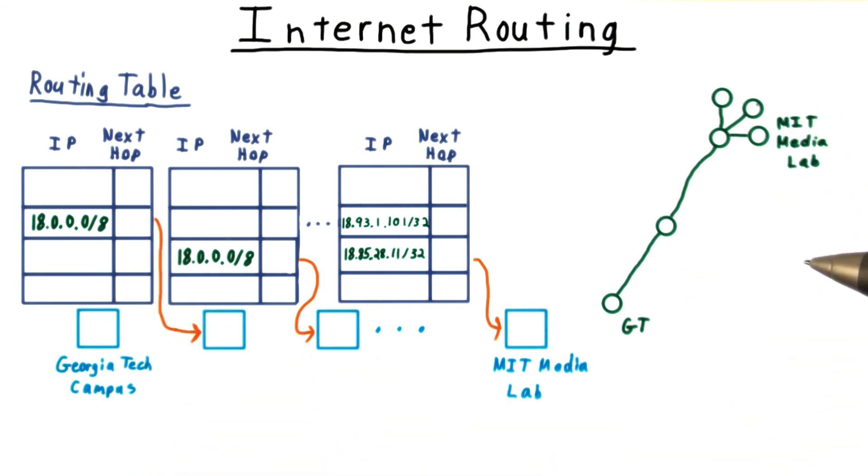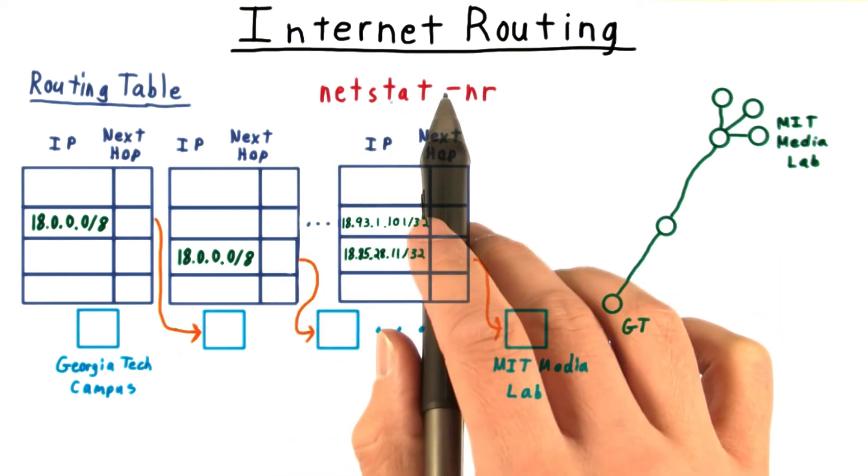This principle can be applied more broadly to keep the size of routing tables manageable. To see the routing table on your machine, run netstat-nr.